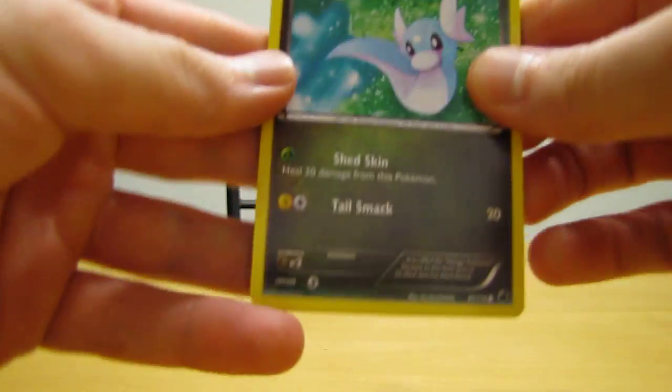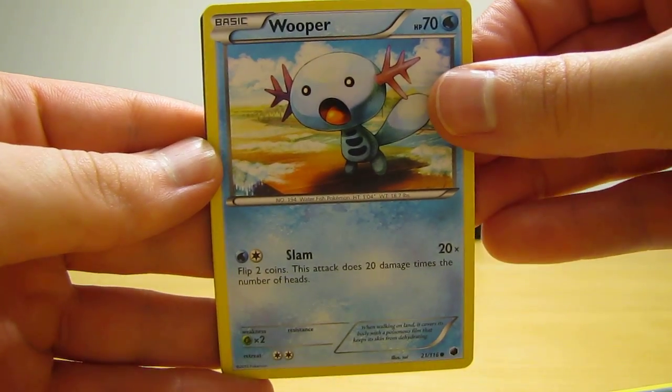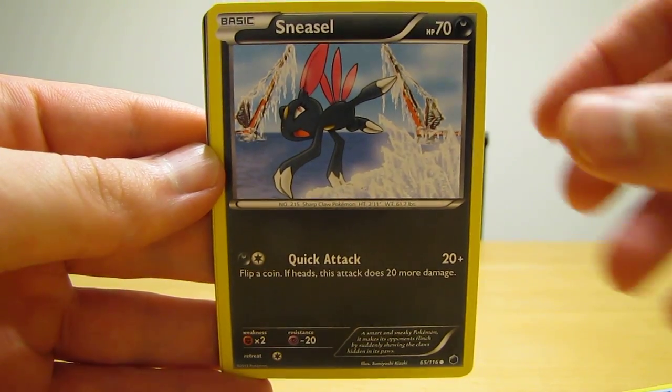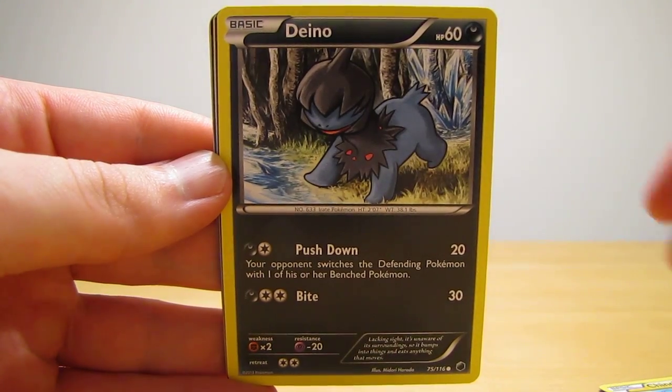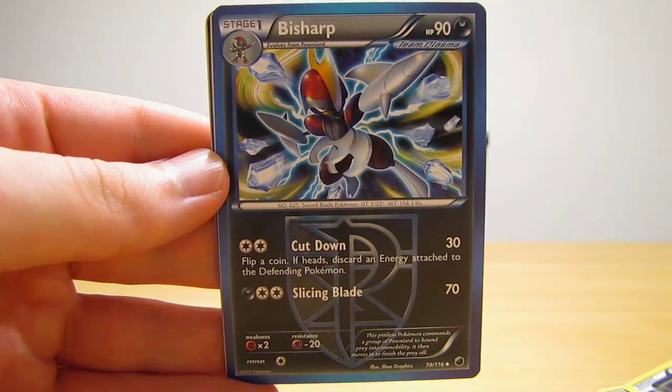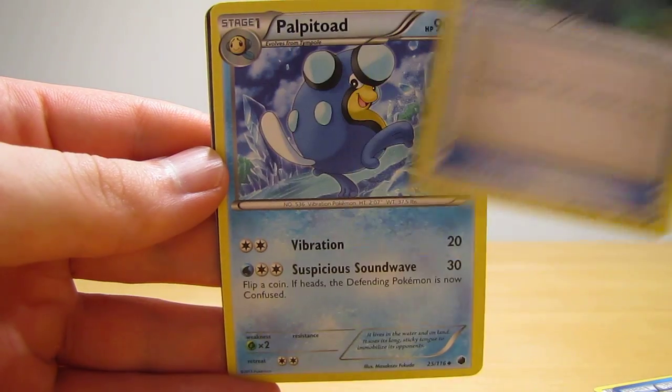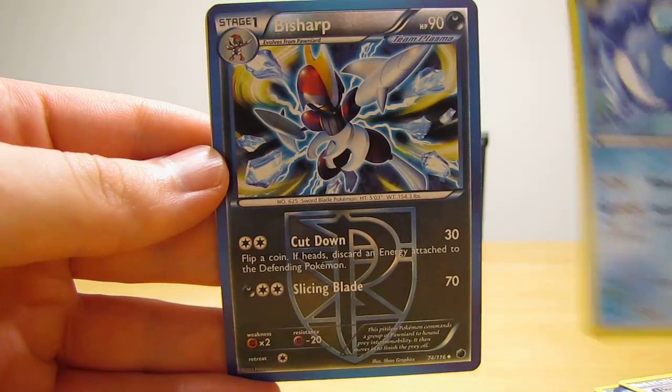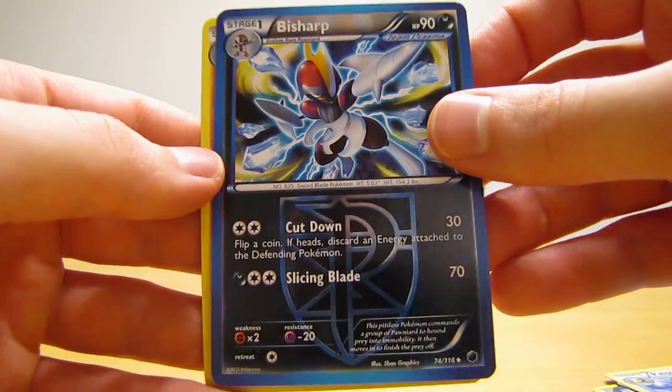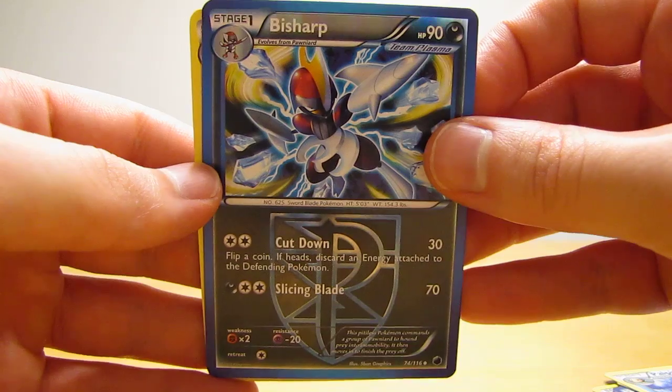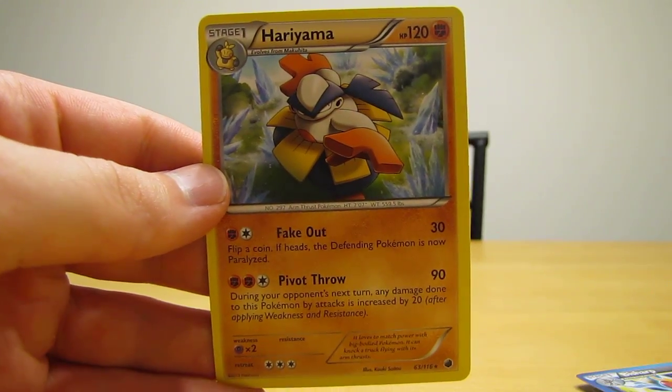This pack starts off with Dratini, Wooper, Wooper, Sneasel, Chinchou, Dino, Bisharp, Floatstone Trainer, Palpitoad, another Bisharp which is the reverse hollow. Had to get in the right light to see that reverse hollow pattern on it. And the actual rare in the pack is a Hariyama.